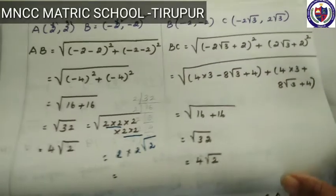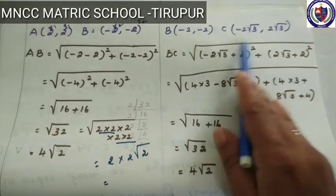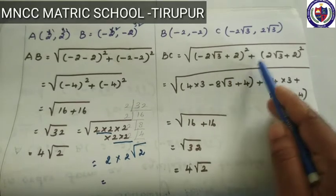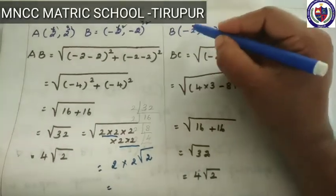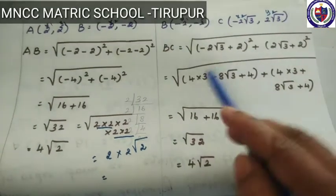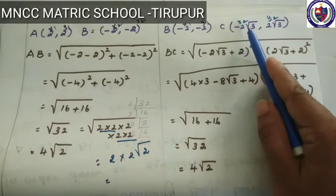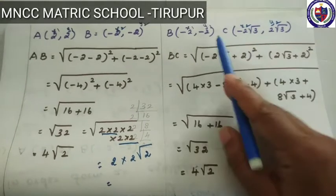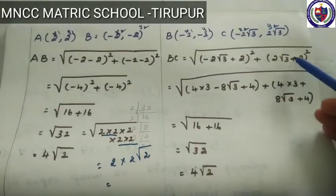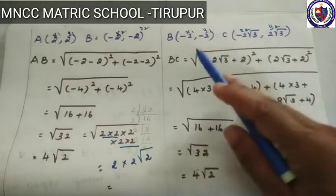The same way, for the second side BC. B is (-2,-2) and C is (-2√3, 2√3). BC = √[(x2-x1)² + (y2-y1)²]. Substituting: x2 - x1 = -2√3 - (-2) = -2√3 + 2, the whole square, plus y2 - y1 = 2√3 - (-2) = 2√3 + 2, the whole square.